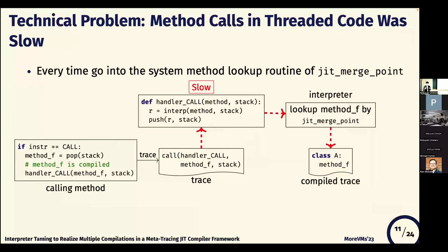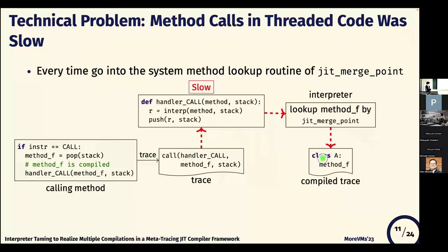The reason is that every time the method code goes through execution, it goes through the slow method lookup routine when calling compiled methods. Here, we assume that method s is already compiled, and in this trace it is going to call function f. This is the handler — an interpreted definition in the instruction code. When this instruction is compiled, this trace is generated, but it always goes through this interpreted handler and always goes through the method lookup routine, making it slow to finally call method f.